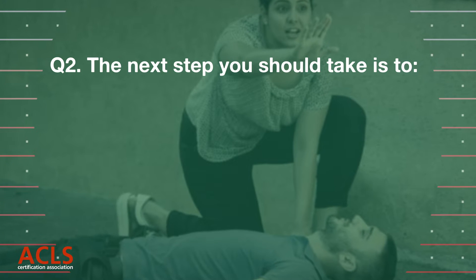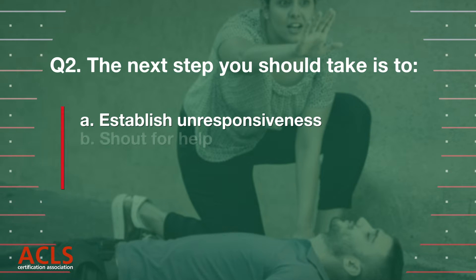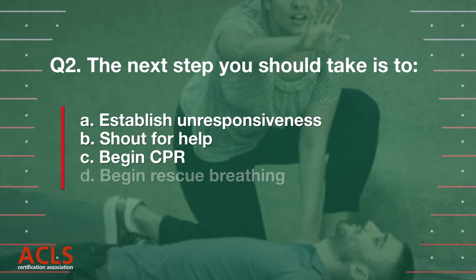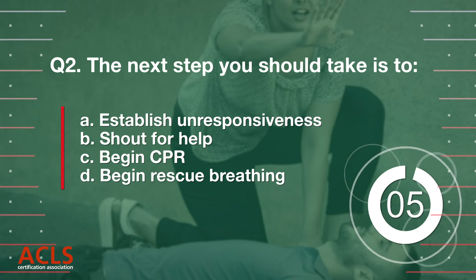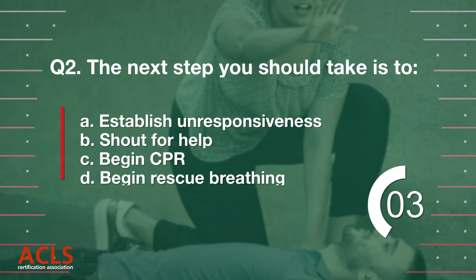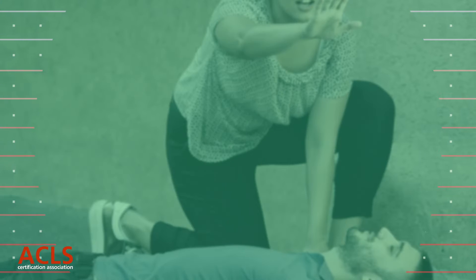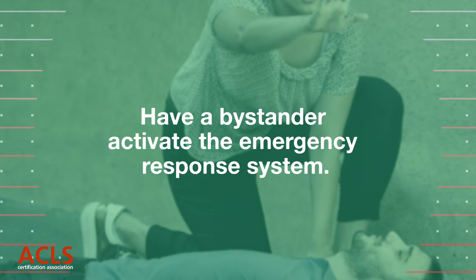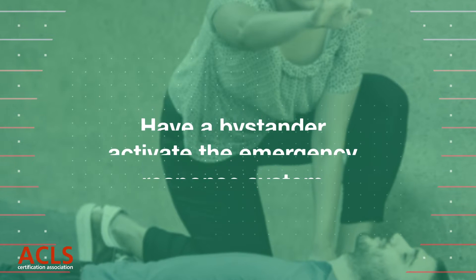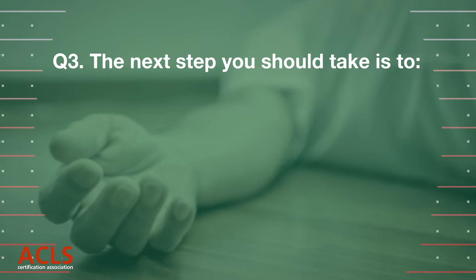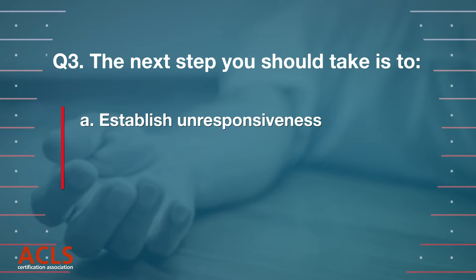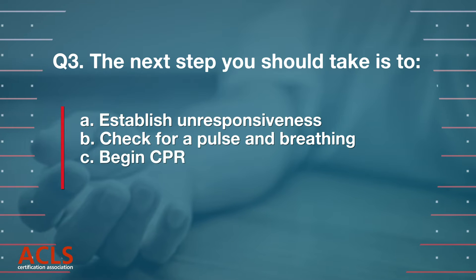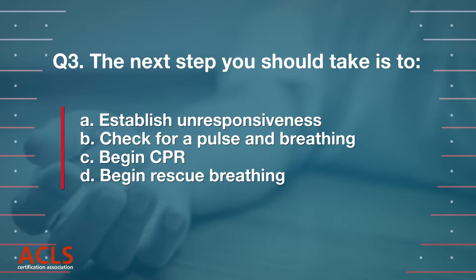Question 2: the next step you should take is to — A) establish unresponsiveness, B) shout for help, C) begin CPR, D) begin rescue breathing. Correct answer: B, shout for help. Have a bystander activate the emergency response system.